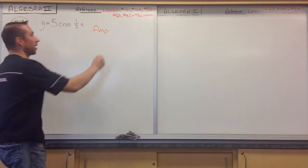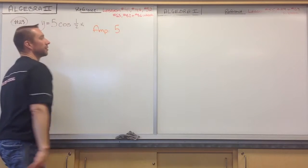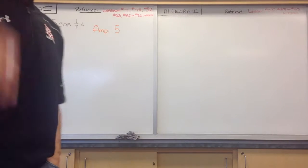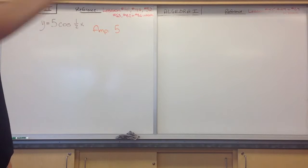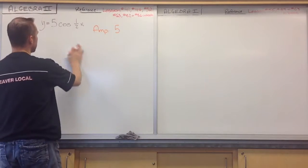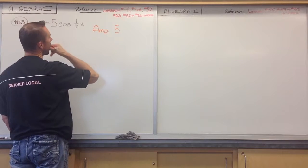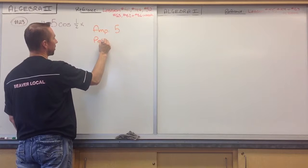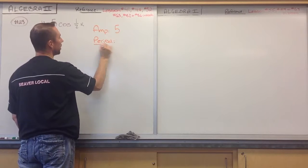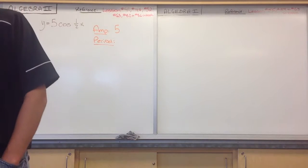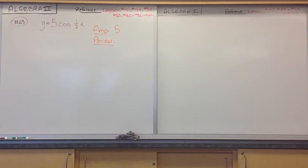The amplitude is 5. That means the highest point of this function is going to be 5, and the lowest is going to be negative 5. It's going to have a cosine wave in between. So now, what is my period? We also need to understand the period, because we're only graphing one cycle. We need to know how many radians, how many degrees that one full cycle takes.